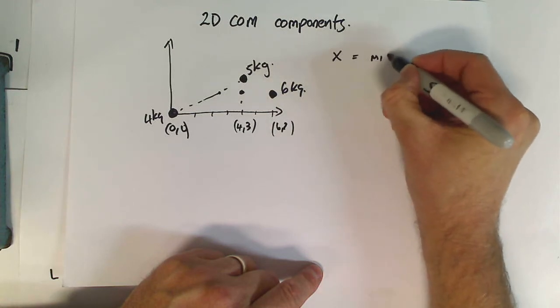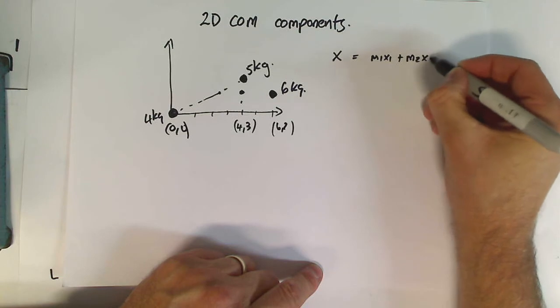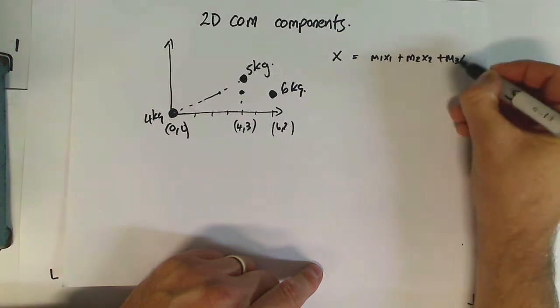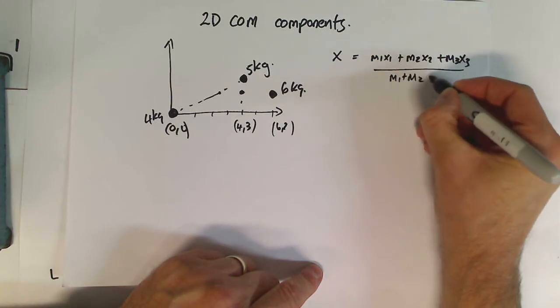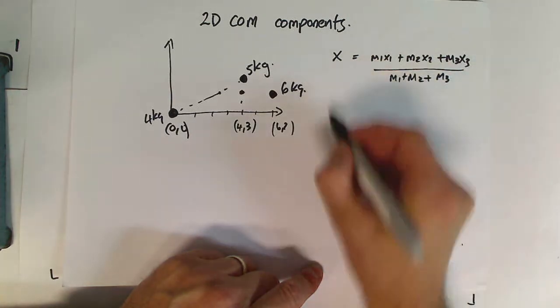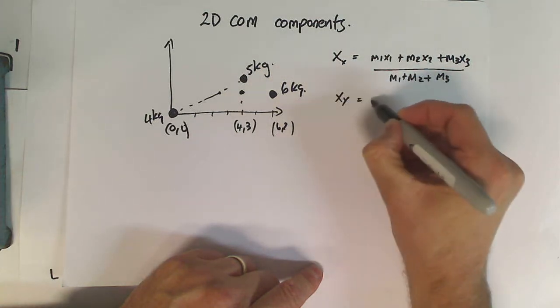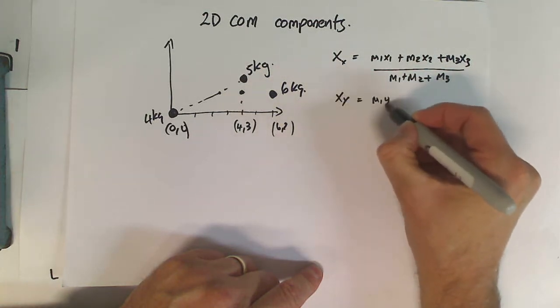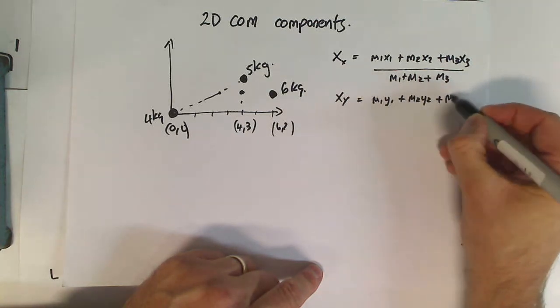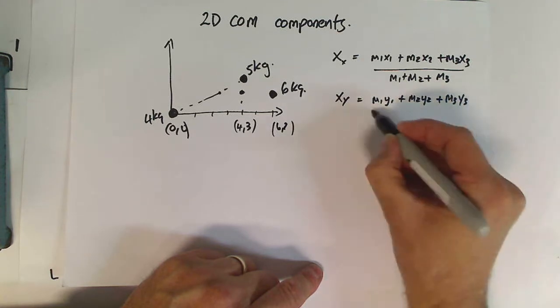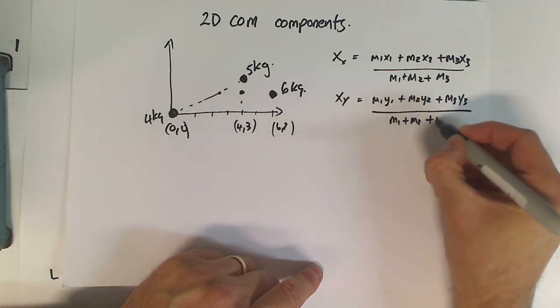x equals m1x1 plus m2x2 plus m3x3, all over m1 plus m2 plus m3. Now, that's for the x component. y for the y component will equal m1y1 plus m2y2 plus m3y3, all over m1 plus m2 plus m3.